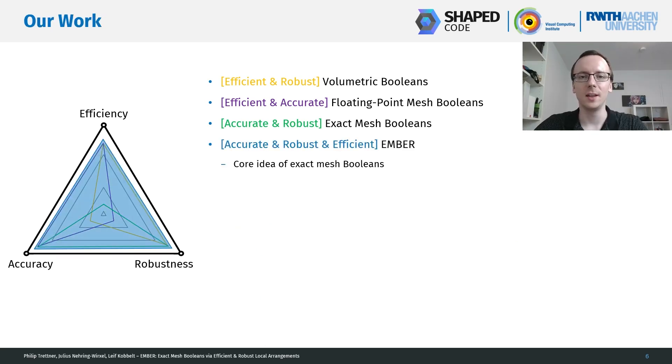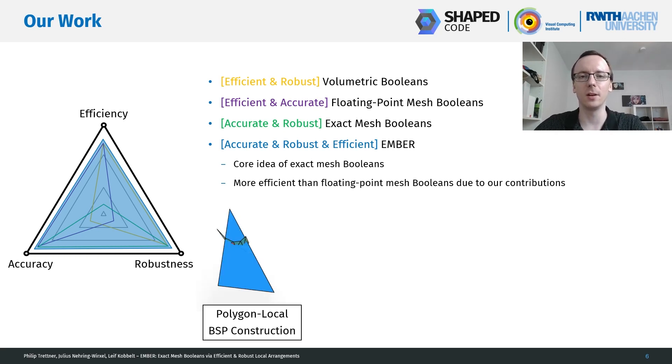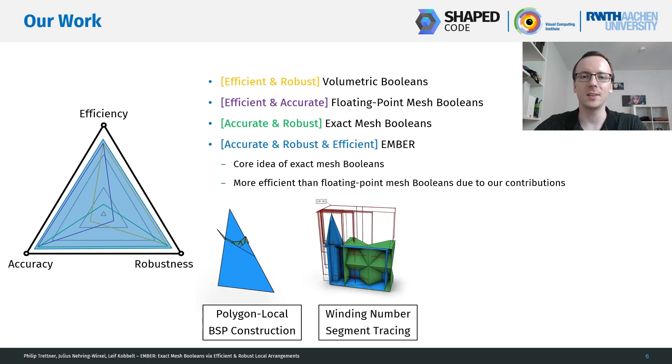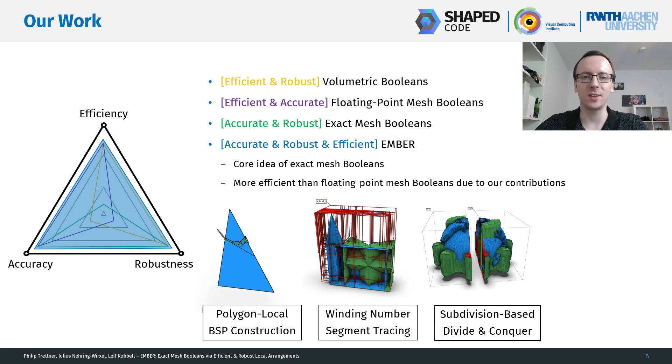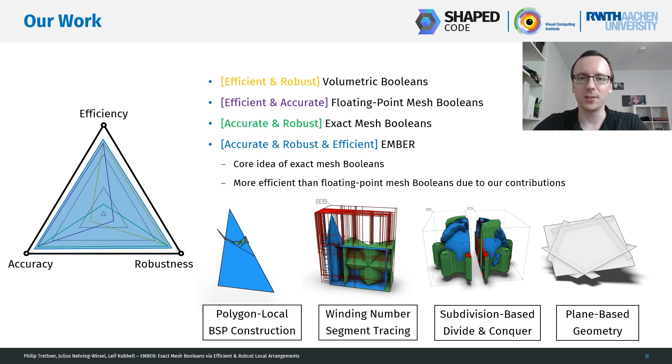Our method, AMBER, is also a method for exact mesh booleans. However, due to our various contributions, we can actually restore and even exceed the efficiency of the previous methods. We do that by using polygon-local BSP construction for the intersection resolution, by having a segment tracing that accumulates winding numbers for classification, by using a subdivision-based tactic to scale to large meshes, and finally we cast all this in a plane-based geometry paradigm that allows us to give strong guarantees for exactness and robustness.